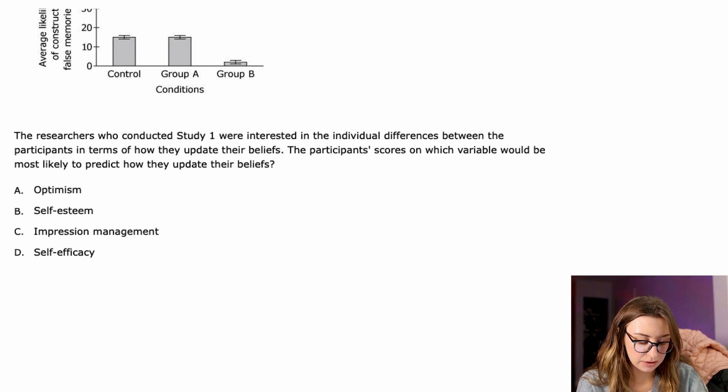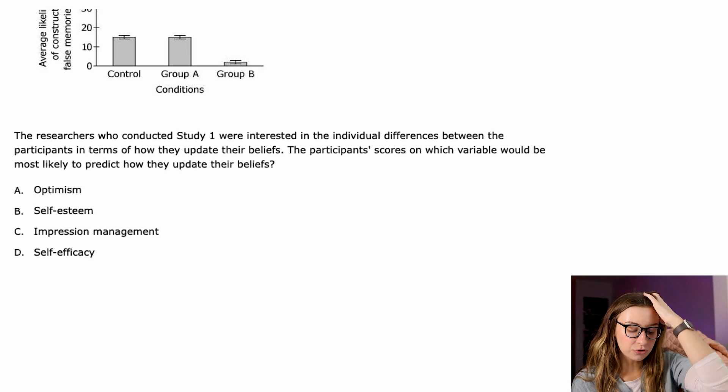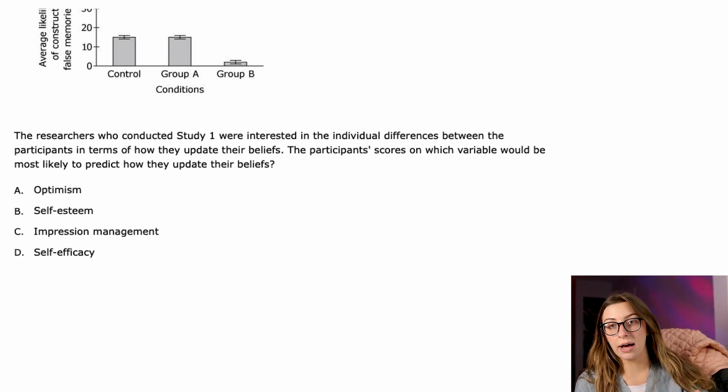And then the last question. The researchers who conducted Study 1 were interested in the individual differences between the participants, in terms of how they update their beliefs. The participants' scores on which variable would be most likely to predict how they update their beliefs. So now we're looking at the individual level. Based on the results of the study, we know that people are more likely to update their beliefs if they're given information that things were actually better than they seemed in the first place. What does that remind you of out of these answer choices? Reminds me of an optimistic person who's always looking on the right side, always thinking that things are better than they actually are. So I was drawn to optimism immediately.